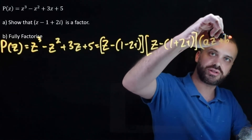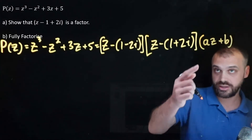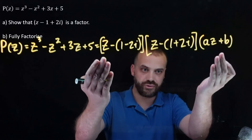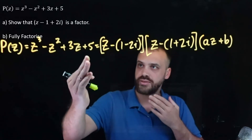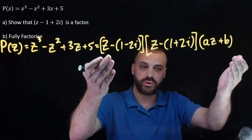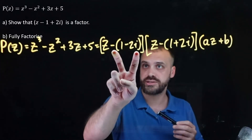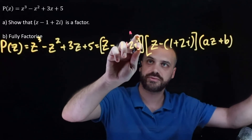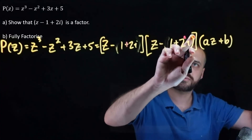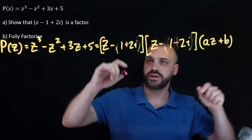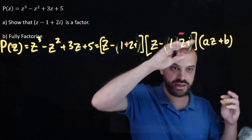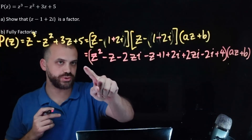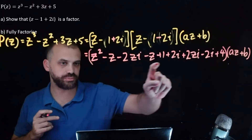So I deduce that this remaining factor is az plus b, where a and b are real numbers. What I'm going to do is expand this factor times this factor, and this factor times this factor, and then equate those coefficients with the coefficients from the original polynomial. Removing the outer brackets, one sign becomes a plus and the other becomes a minus. Now I'm going to expand all of these brackets using FOIL expansion.